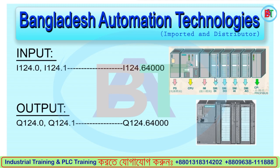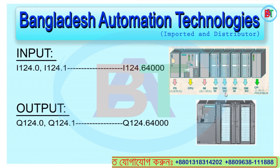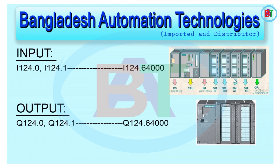DI stands for Digital Input. The first module is Digital Input. The third part is Digital Output, this is the 312C. The second part is the Analog Module — Analog Input and Analog Output.